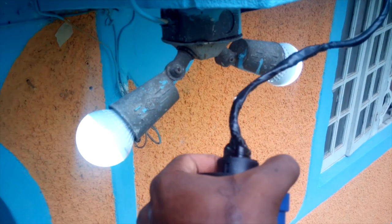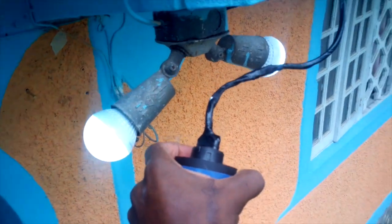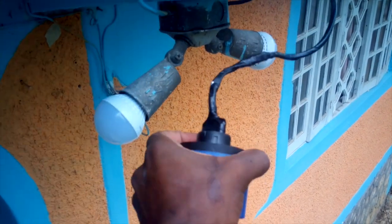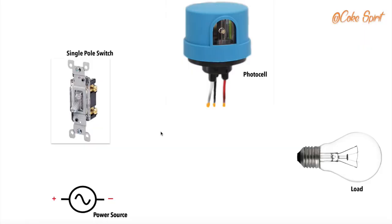Hey peeps, I have this video after doing a photocell installation and decided not to delete it, so I'll be sharing with you guys how to do this installation and I hope you'll enjoy it. As you're seeing on my screen, I have a power source, a single pole switch, a photocell, and the lighting load.